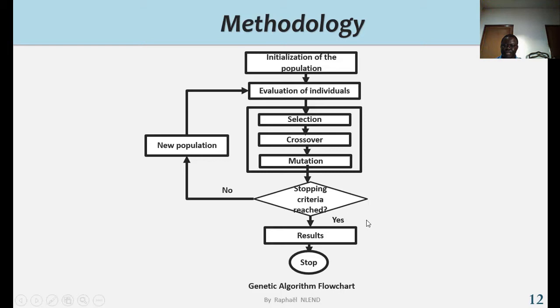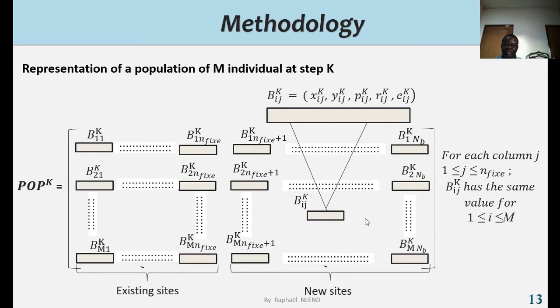Here we have the representation of the population of m individuals as we have talked about with a fixed part and a variable part. A fixed part constituted by existing sites and a variable part with new sites.